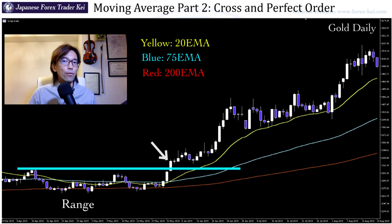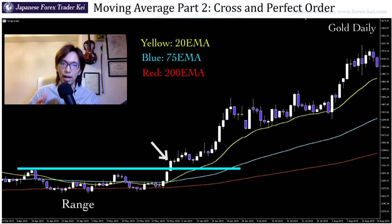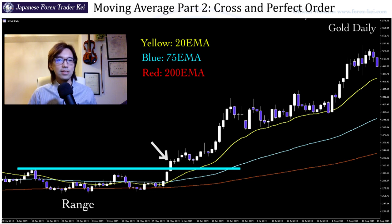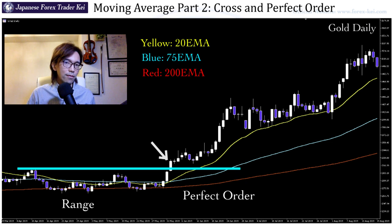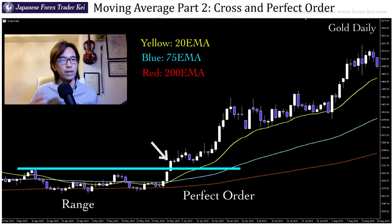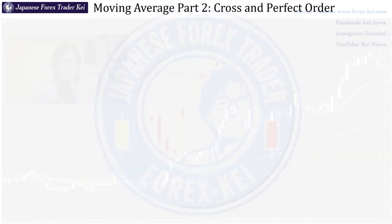And when it does, if you look at the MAs, all the MAs are aligned beautifully from short-term, mid-term, and long-term, just like a rainbow. This is called the perfect order — when you see all the moving averages aligned in the same direction. And so when it's bearish, all the moving averages are aligned to the downside.